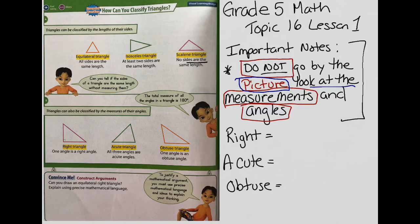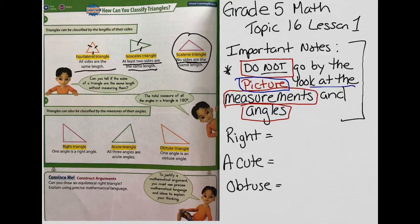Let's see what we have on our notes section on the page. This is an equilateral triangle — all the sides are the same length, so each of these sides is exactly the same measurement. The isosceles triangle has at least two sides that are the same length, so two sides of the triangle are going to be identical. The scalene triangle has no sides that are the same, so none of the sides are going to be the same measurement.